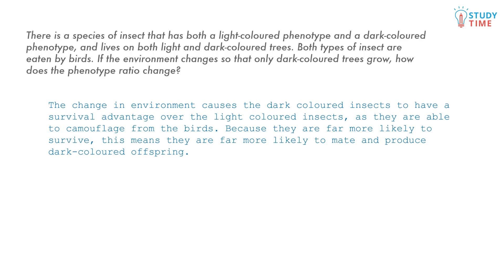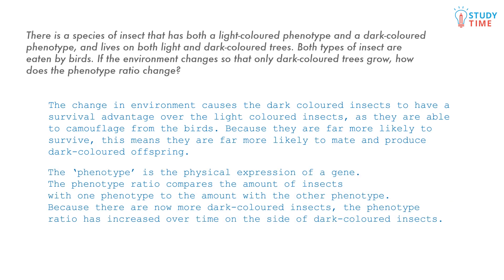Have we answered the question yet? Not quite. We need to refer to how the phenotype ratio has changed. Let's add that. We need to remember to define the term phenotype. The phenotype is the physical expression of a gene. The phenotype ratio compares the amount of insects with one phenotype to the amount with the other phenotype. Because there are now more dark coloured insects, the phenotype ratio has increased over time on the side of dark coloured insects.